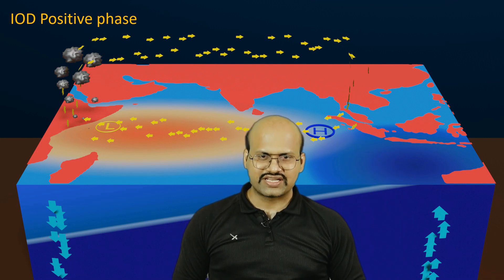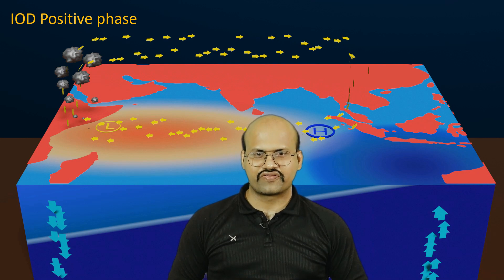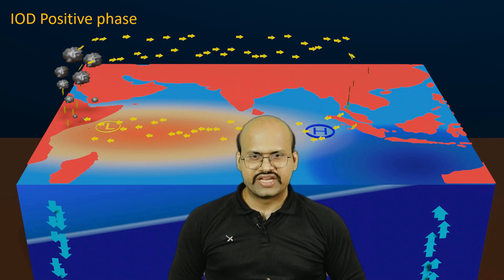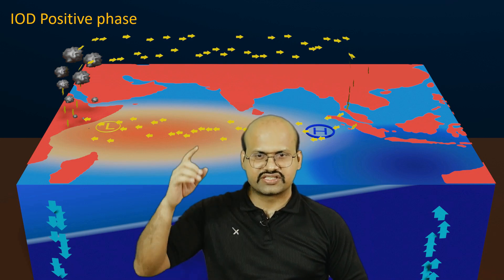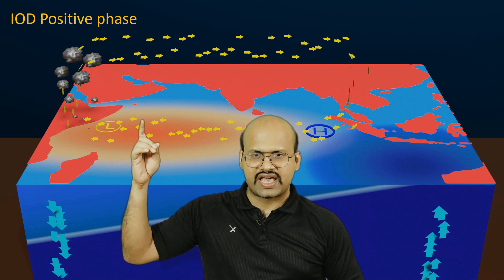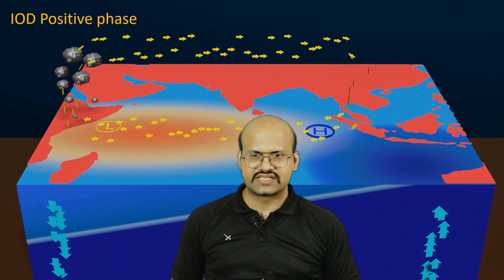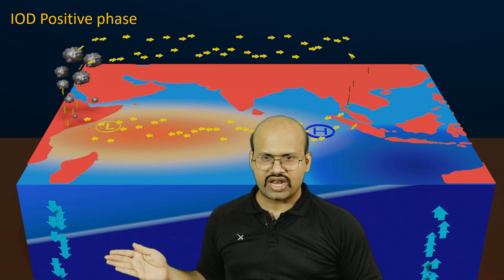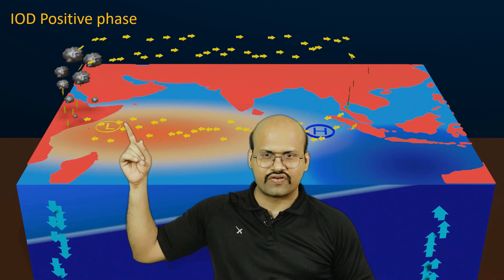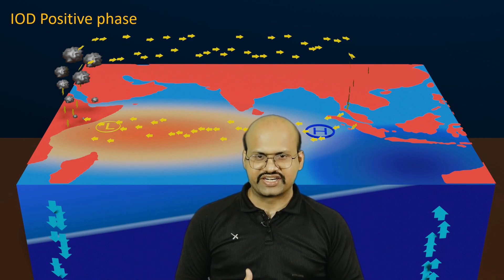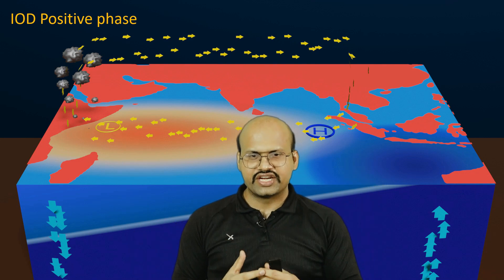During the positive phase, air rises over the African continent, carries a lot of moisture, causes adiabatic cooling, and produces heavy rainfall there. Meanwhile, over the eastern region winds are descending, getting adiabatically heated, so there is no rain. These are the three phases of Indian Ocean Dipole — influencing surface winds, rainfall, thermocline depth, and accumulation of hot and cold water in different regions of the Indian Ocean.